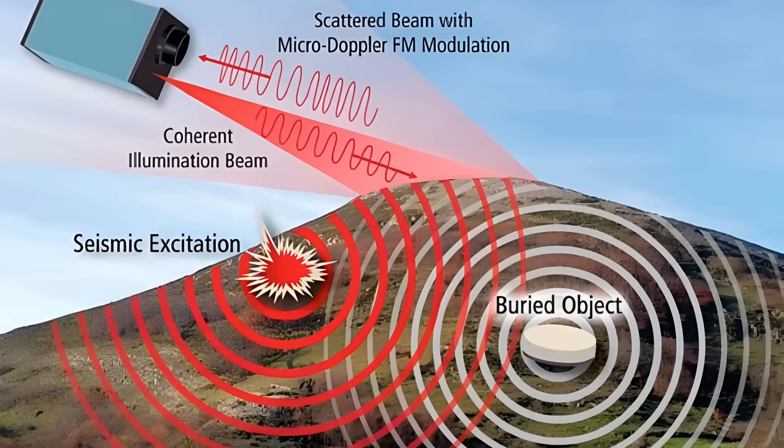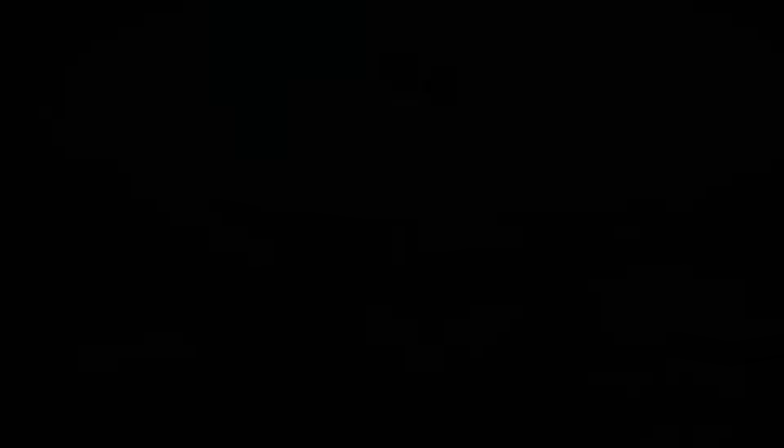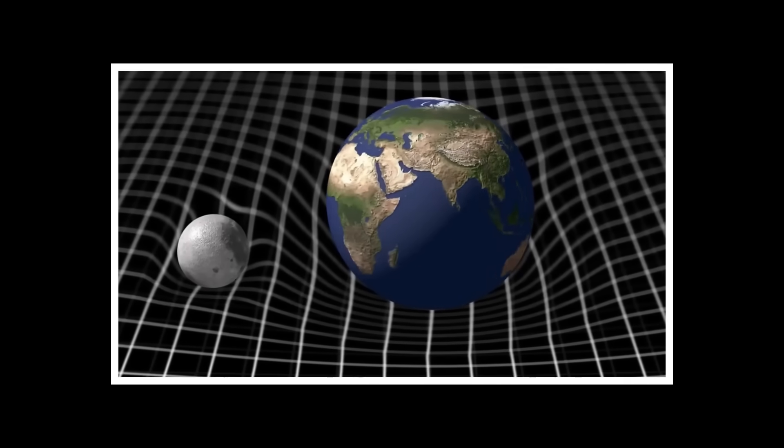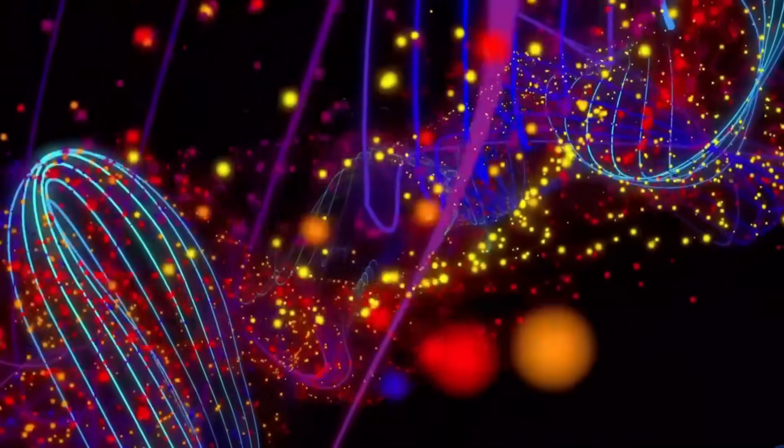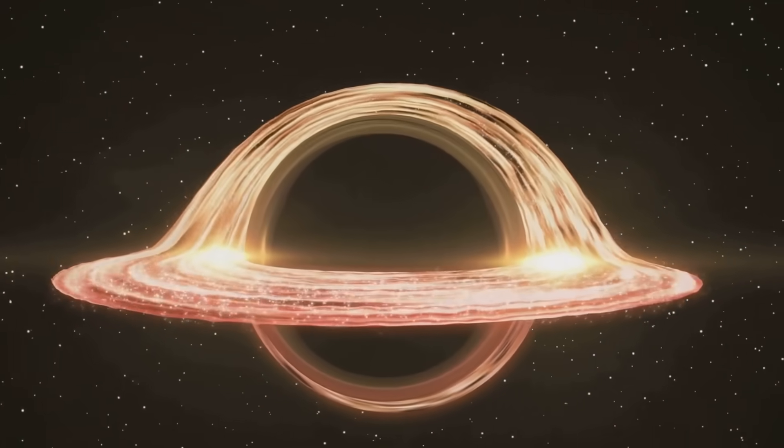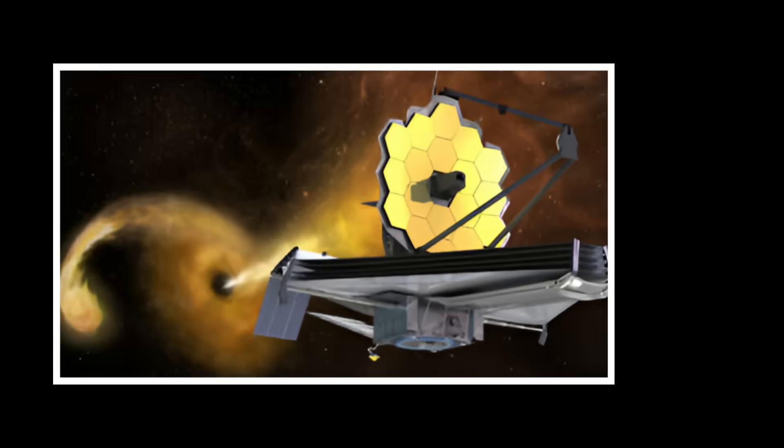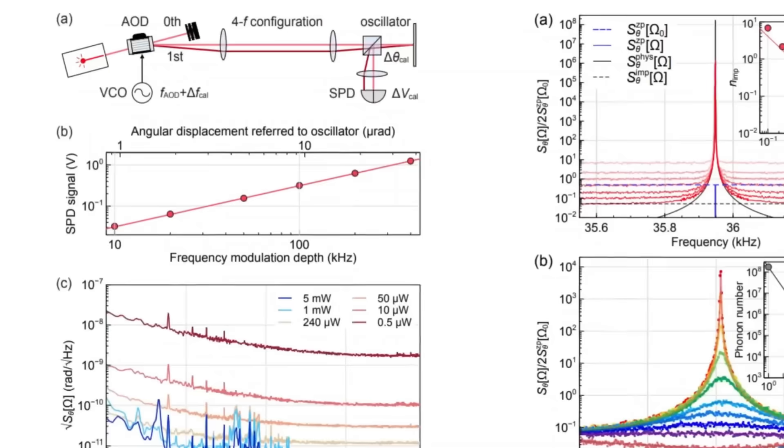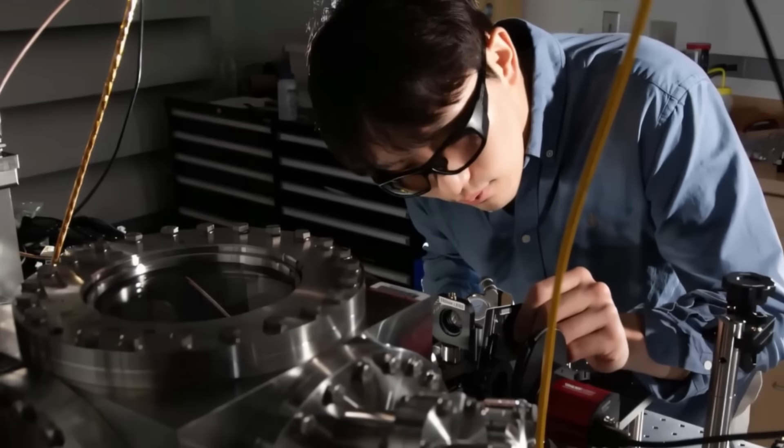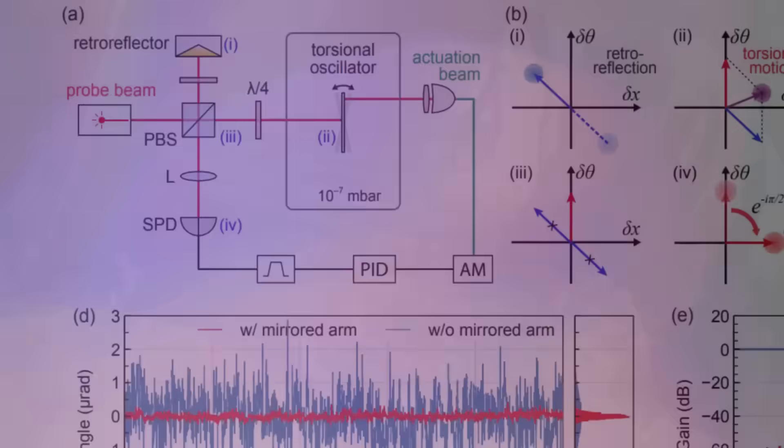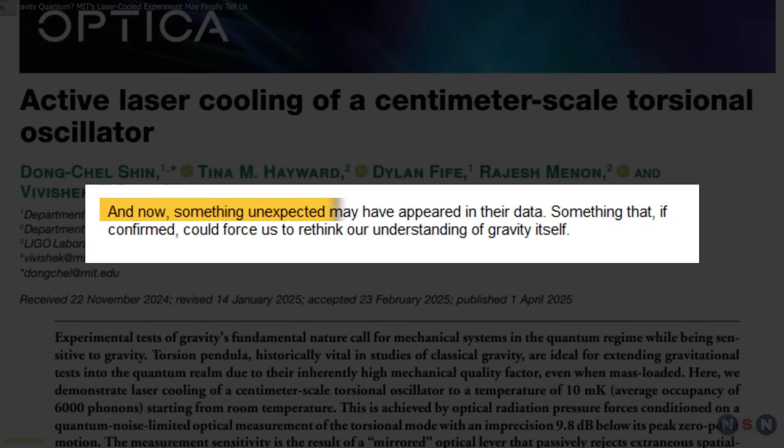The strategic implications of quantum gravity sensors extend far beyond pure science. Defense agencies worldwide have been racing to develop this technology for years. DARPA, the Pentagon's advanced research arm, has funded multiple quantum sensing programs. Why? Because these devices can detect what nothing else can. Imagine being able to locate deeply buried bunkers from a distance, or mapping underground tunnel networks without drilling, or tracking submarines beneath the ocean surface by measuring their gravitational signature.